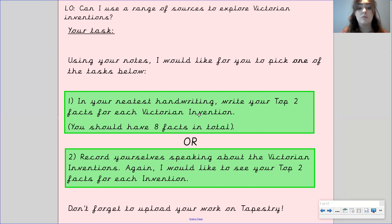So activity number one is to write out the top two facts, activity number two is to record yourself, and you can pick one of these activities to complete. Please make sure you upload your work to Tapestry and I am really looking forward to seeing what you have got. Bye Gandhi class, see you next time.